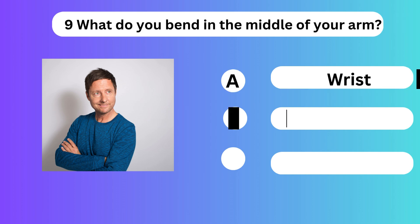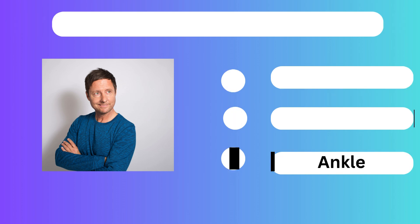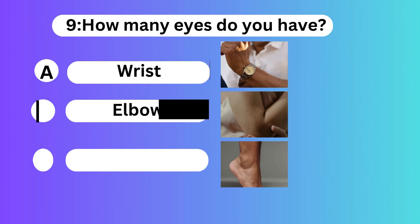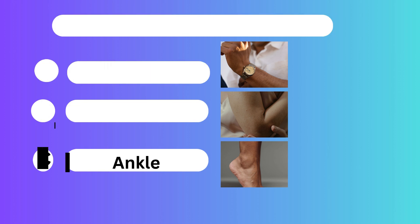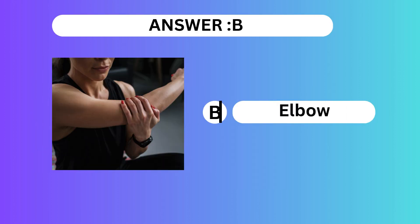Question 9. What do you bend in the middle of your arm? A. Wrist. B. Elbow. C. Ankle. Answer is B. Elbow.